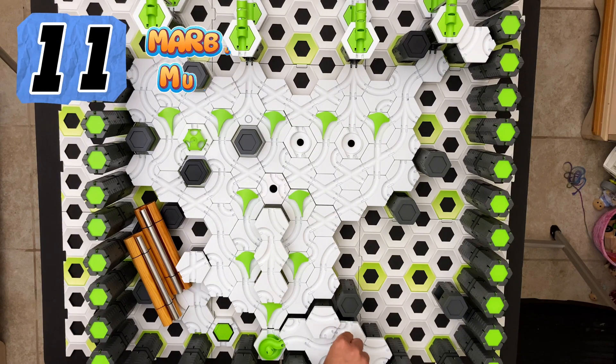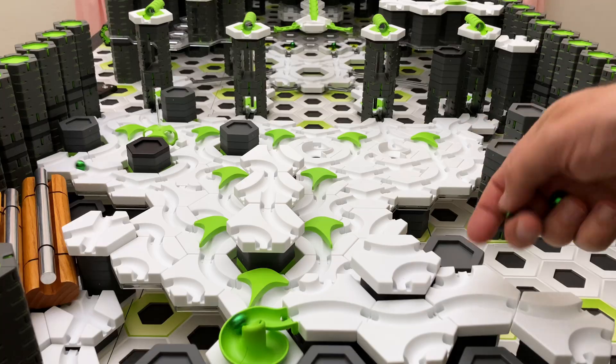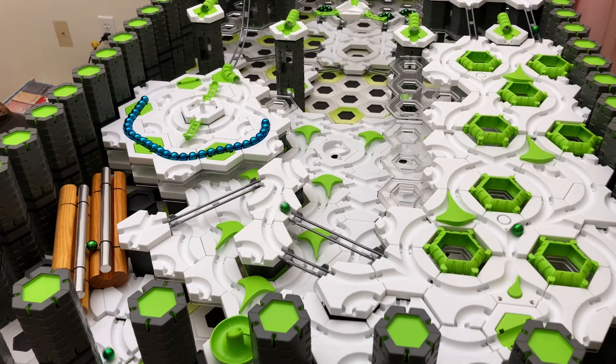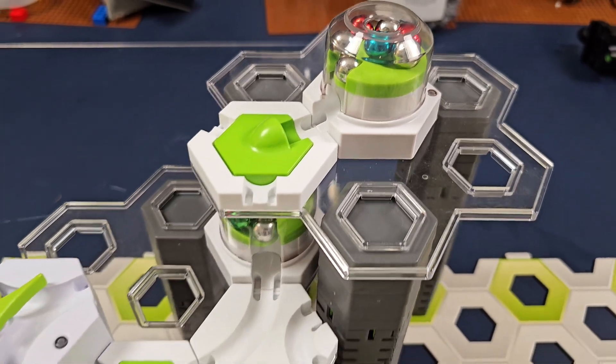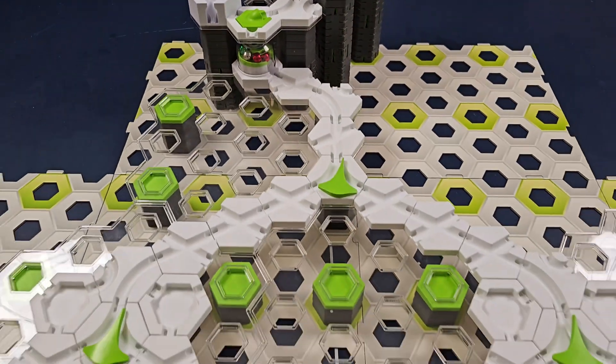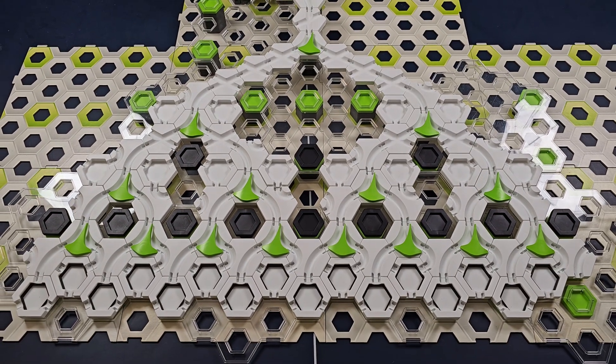Number 11, Marble Music. My second marble grandfather clock played the 16 note Westminster chimes melody, followed by some hour strikes. Here's how it works. Since we have to play a 16 note melody, we first construct a grid of 15 GraviTrax switches with 16 exits, one for each note.